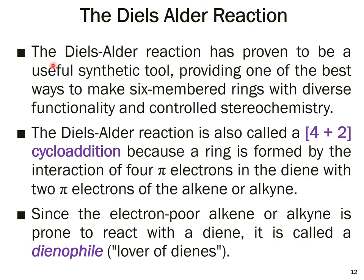The Diels-Alder reaction has proven to be a very useful synthetic tool, providing one of the best ways to make six-membered rings with diverse functionality and controlled stereochemistry. In synthetic chemistry, creating a six-membered ring with the correct stereochemistry is very important, and the Diels-Alder reaction is a very beautiful reaction that gives you good control over the stereochemistry of the products.